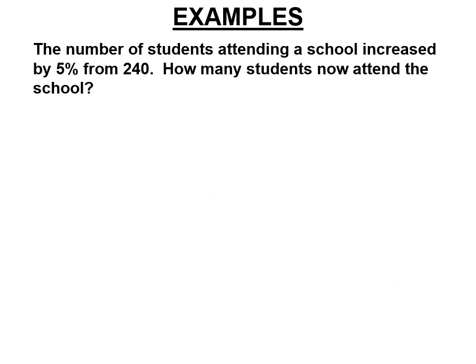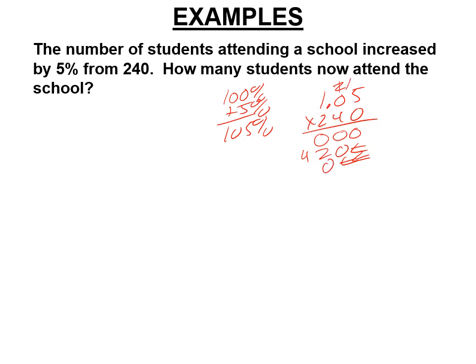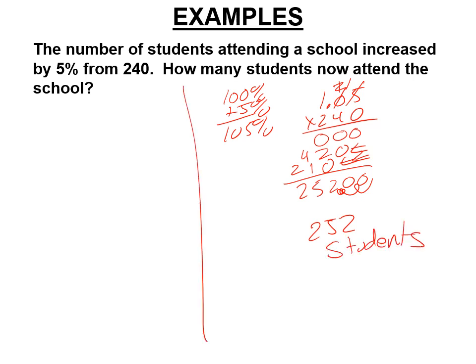The number of students attending a school increased by 5% from 240. How many students now attend the school? So if there's 5% more, we're at 105%. So we're going to do 1.05 times 240. Here you get a row of zeros to start. Then you go over one and go 4 times 5 is 20. Carry the 2. 4 times 0 is 0 plus 2. 4 times 1 is 4. Now, for the third row, you go over twice because you've got to start underneath this 2. So 2 times 5 is 10. Carry the 1. 2 times 0 plus 1 is 1. 2 times 1 is 2. 0, 0, 2, 5, 2. Move the decimal twice. There are 5% more students there. It's 252 students.